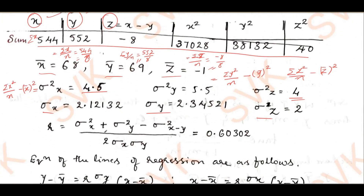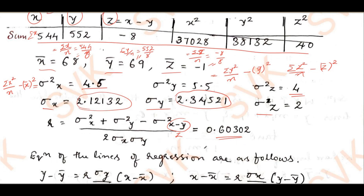The correlation coefficient formula (using the substitution z = x − y) is: r = (σ²x + σ²y − σ²z) / (2·σx·σy). Substituting: (4.5 + 5.5 − 4) / (2 × 2.1232 × 2.3452) = 0.60302. So the correlation coefficient r ≈ 0.603.